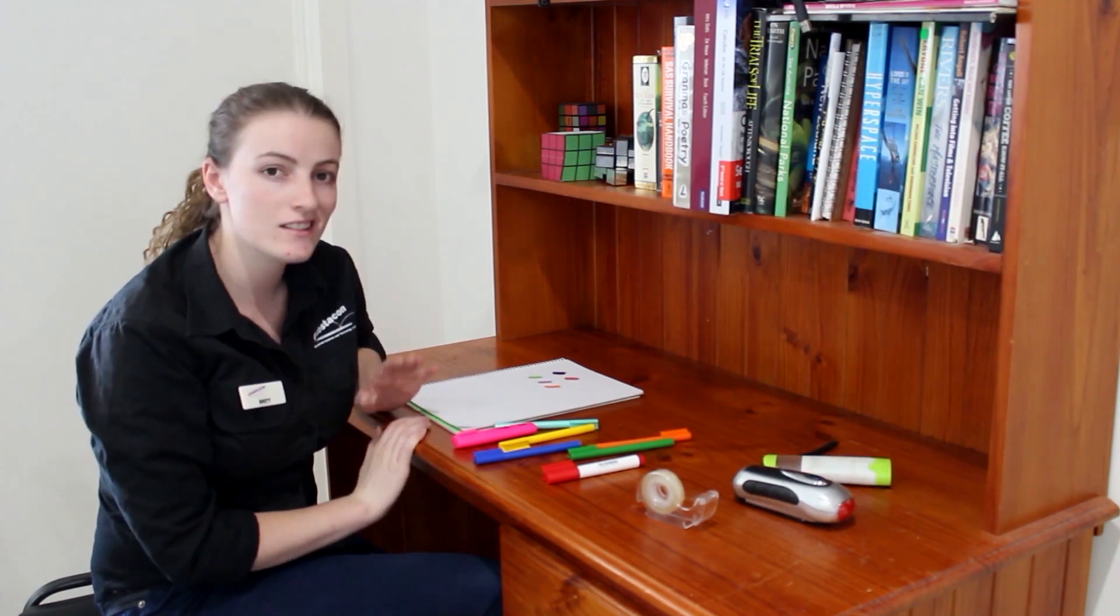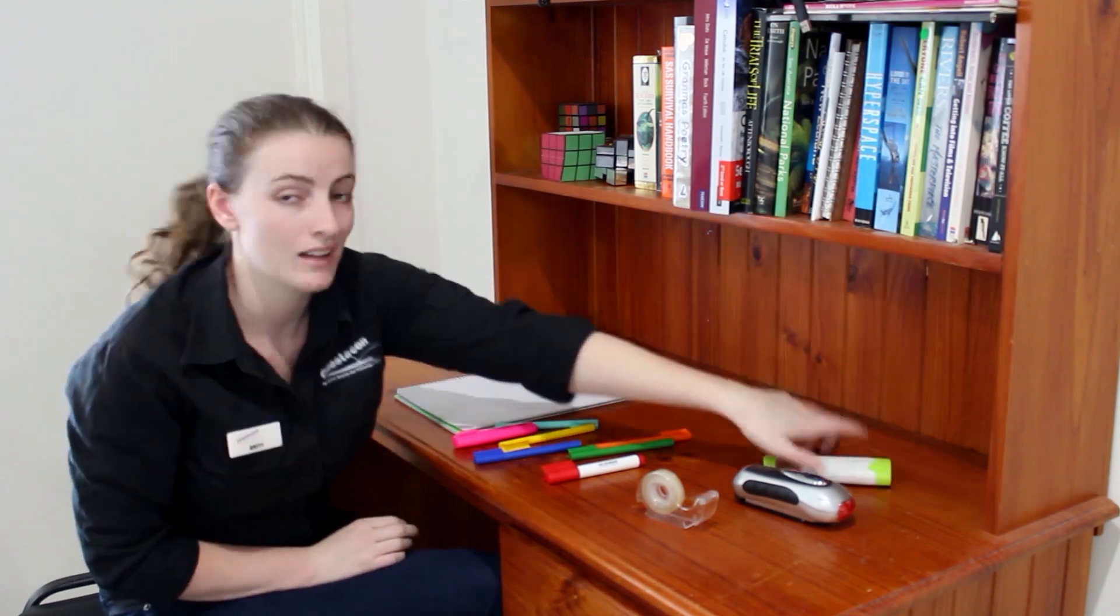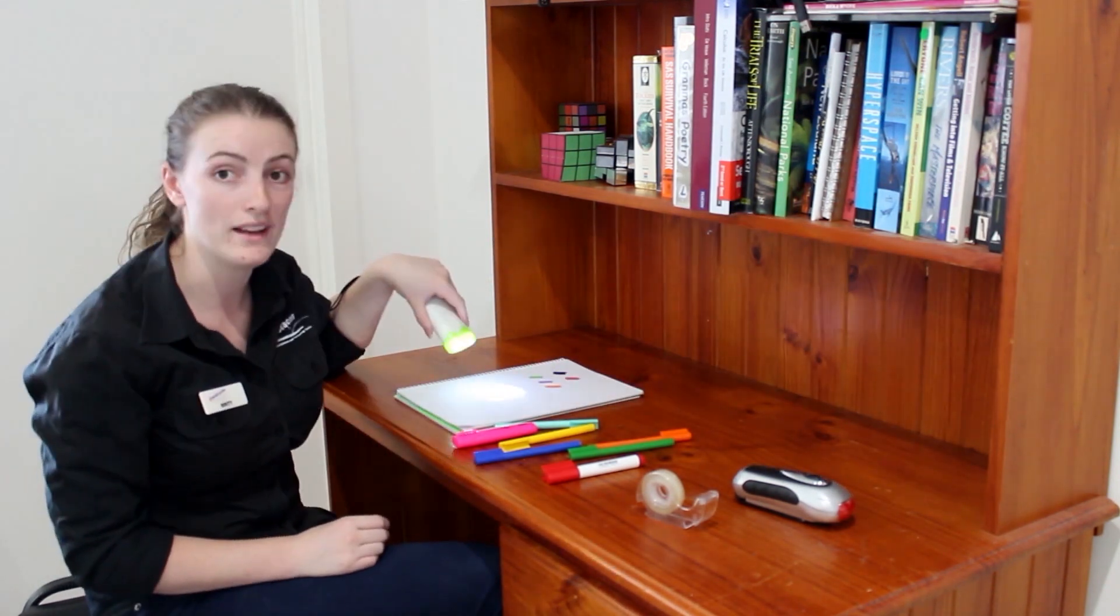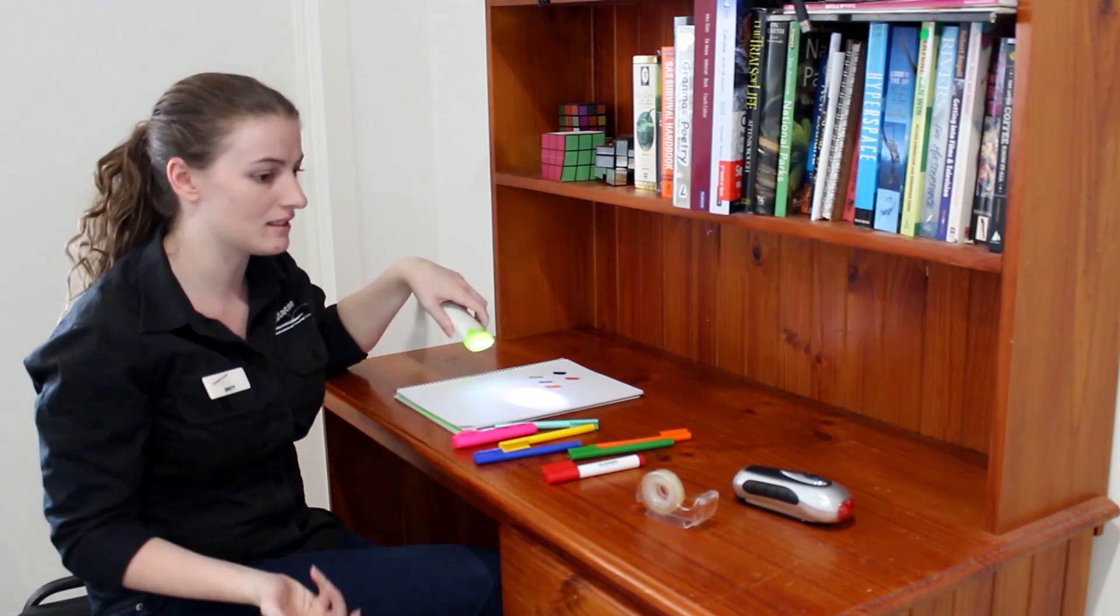But there's a different type of colour mixing that you can do. To test additive colour mixing, you're actually going to add light onto something. I'm going to use a torch. This torch here is white light. So to make this a coloured torch...